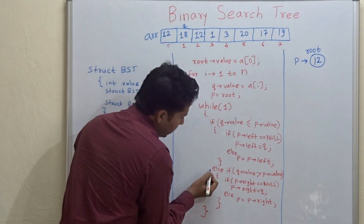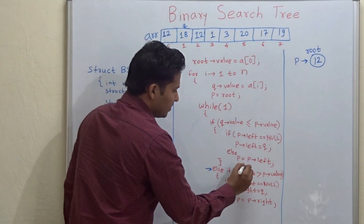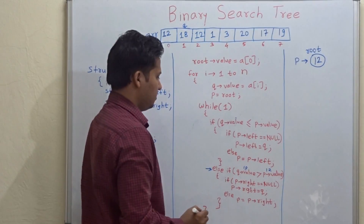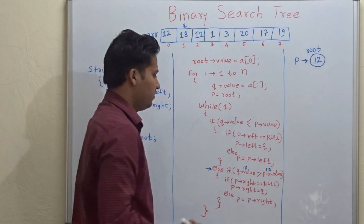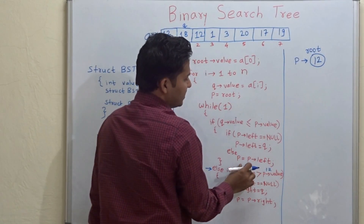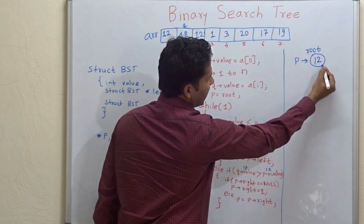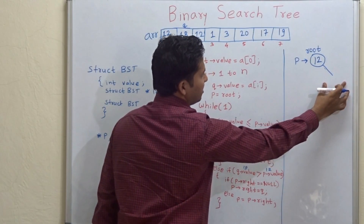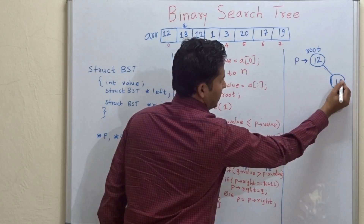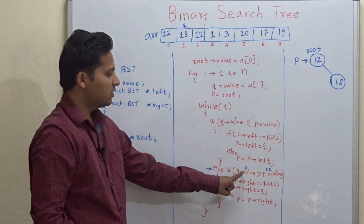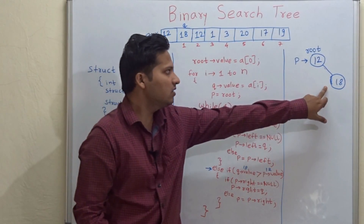We move to else. In the else-if, we check whether q's value is greater than p's value — is 18 greater than 12? Yes. So we check if p's right equals null. Since 18 is greater than 12, we go to the right of 12 and check whether that space is empty. It is empty, so we attach 18 there using p->right = q. This means 18 is attached to the right of 12.